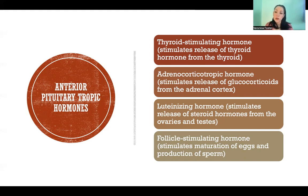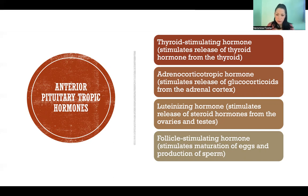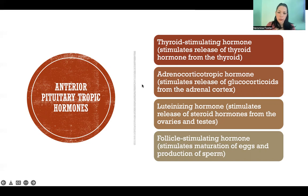Luteinizing hormone and follicle-stimulating hormone are both reproductive hormones. LH stimulates release of steroid hormones — meaning estrogen and testosterone — from the ovaries and testes. And FSH stimulates maturation of eggs and production of sperm in the gonads.